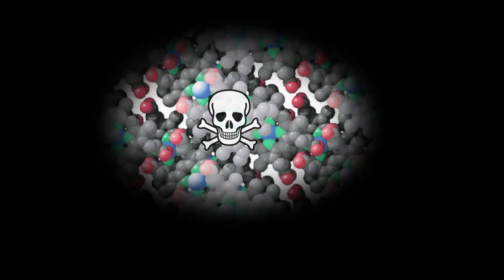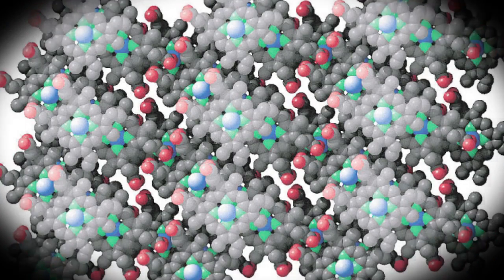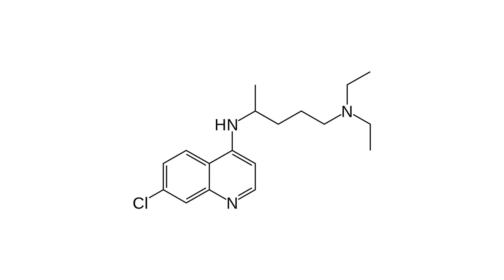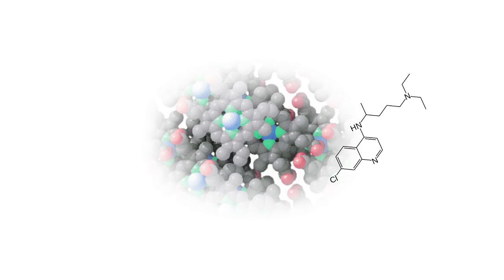The parasite has devised a strategy for polymerizing this heme into an inert polymer called hemozoin. That actually provides an opportunity for us, because if we can prevent the polymerization of heme, in principle we can see the toxicity of heme re-emerging. Some of the most successful anti-malarial compounds, such as chloroquine, can actually bind heme and prevent its polymerization, and presumably the increased amount of free heme produced then kills the parasite.